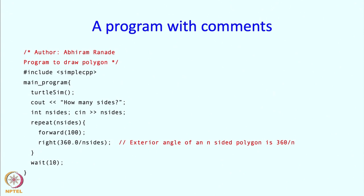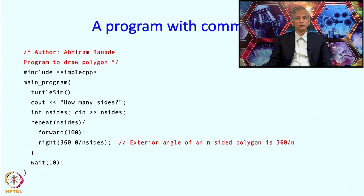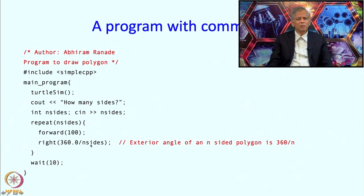In our polygon program, I have put two comments. At the top I put a comment telling who the author is and the purpose of the program — this is usually good practice. You should put your name on programs so that if somebody has questions they can talk to you, and you should tell them what the program does. Where we divide 360 by n_sides, a reader might wonder why. You can explain that the exterior angle of an n-sided polygon is 360/n, so we turn by 360 divided by n_sides. That is how comments help.